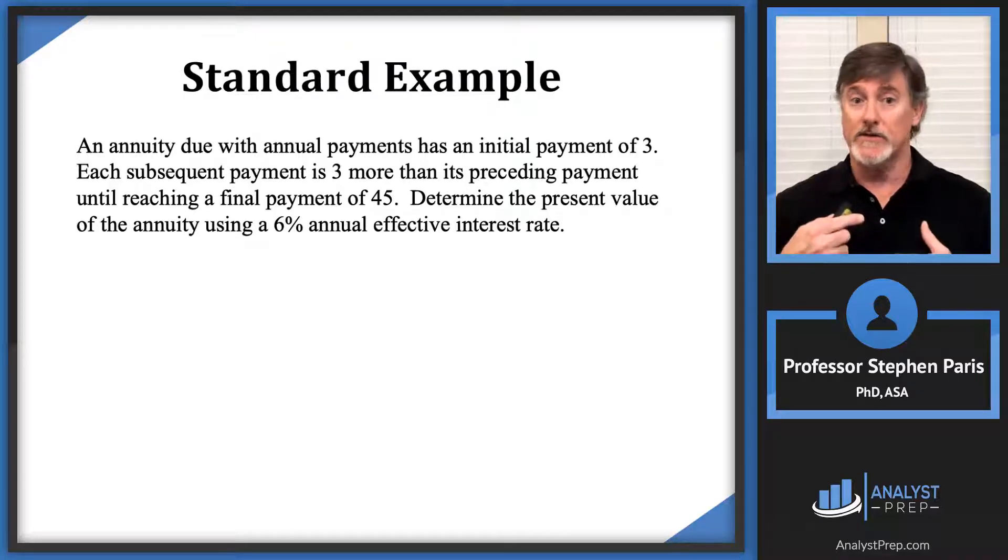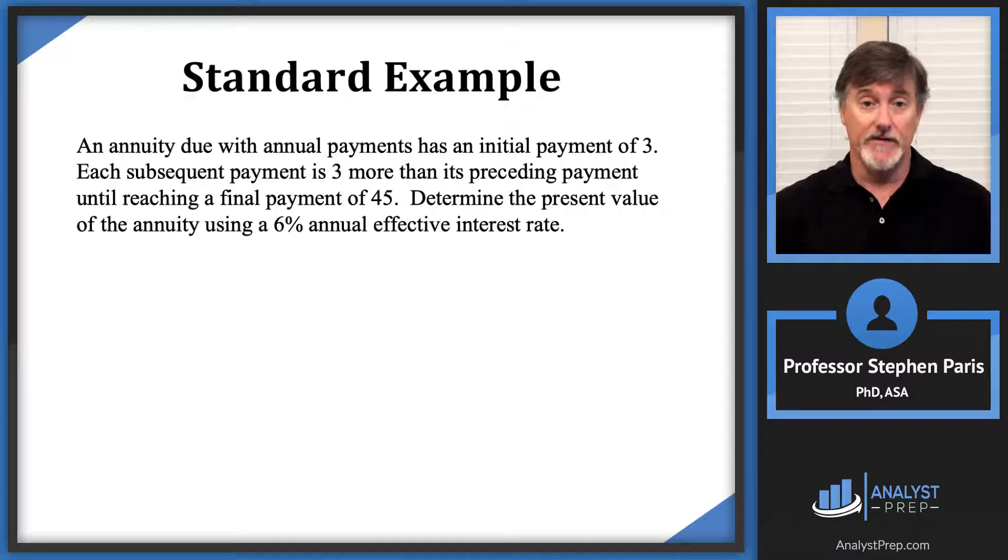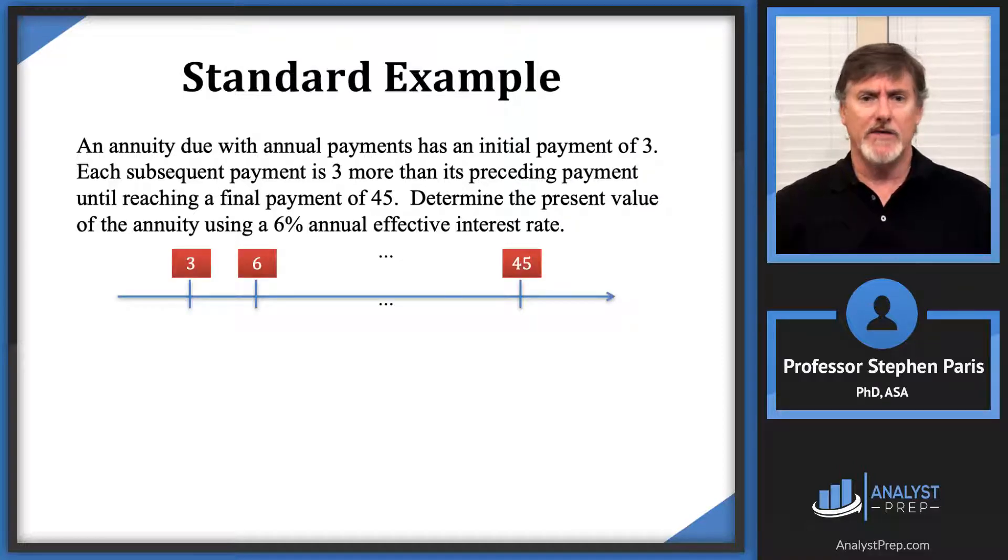So I've got the interest rate, which means I'm going to be able to get a numeric value for the present value of this annuity. Now the timeline is going to look like this, and I'm asked to find the present value. It's an annuity due, so the present value will be at the time of the first payment.